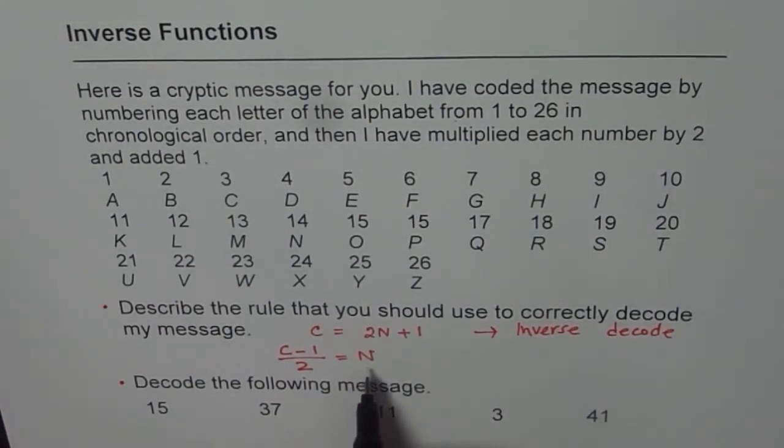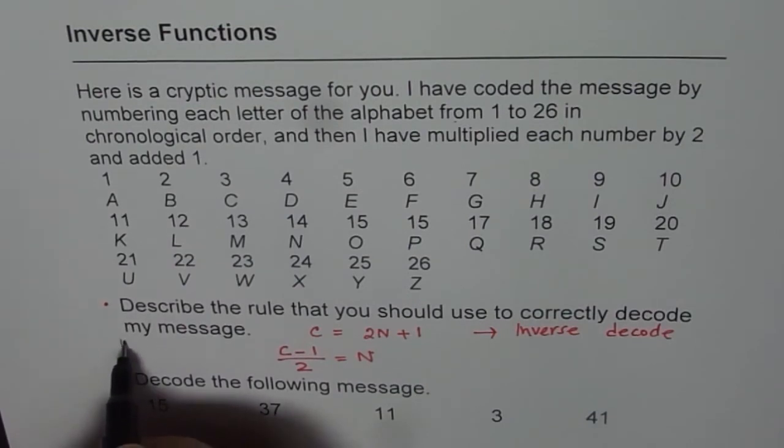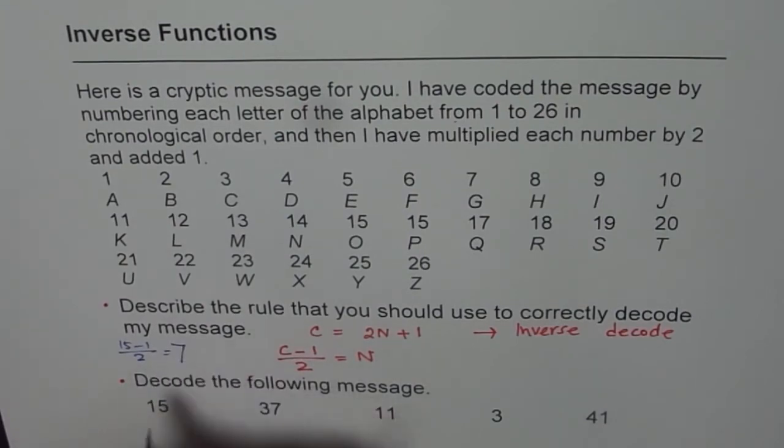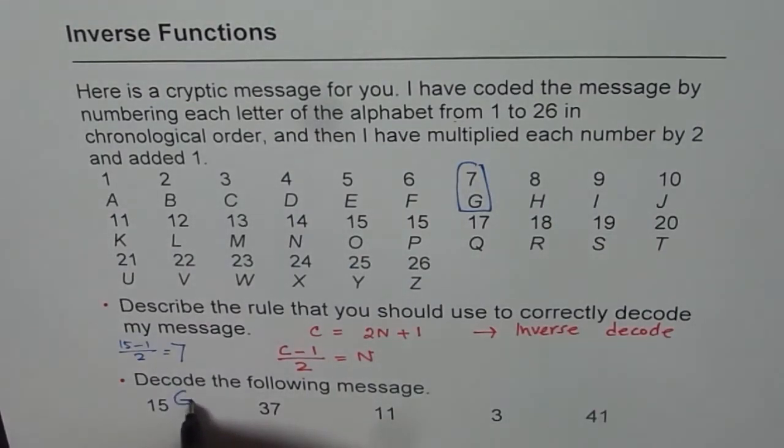So let's start with it and apply this formula of inverse function to decode the given message. First one is 15. So if I write 15 here, what do I get? Let's calculate for 15 first. So we'll do calculations here. 15 minus 1 divided by 2. 15 minus 1 is 14 divided by 2 is 7, and the letter associated with 7 is G.